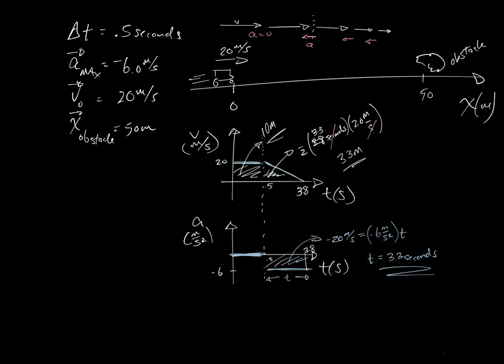So I have a displacement before I started slowing down and I have a displacement while I was slowing down. So my total displacement, delta x, my total displacement is going to be 33 meters plus 10 meters, which is going to be 43 meters.